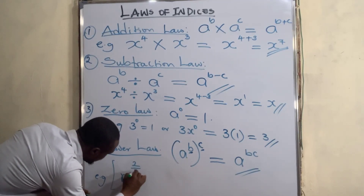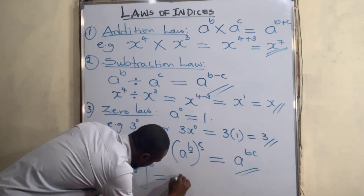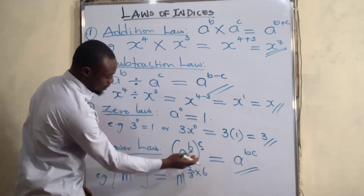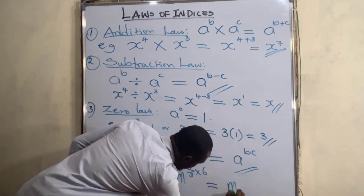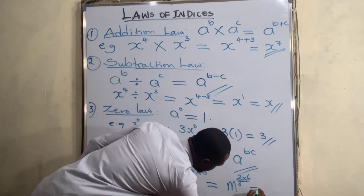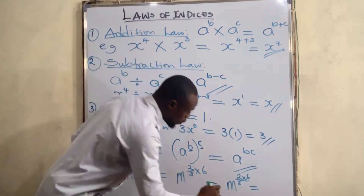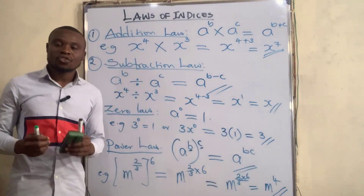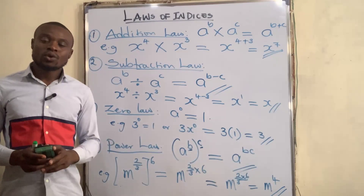For example, m to the power of two-thirds, raised to the power of six. This equals m to the power of two-thirds times six. Two times six is twelve, and twelve divided by three is four. So the answer is m to the power of four. Thank you for watching — in my next video I will be solving lots of examples, so please stay tuned.